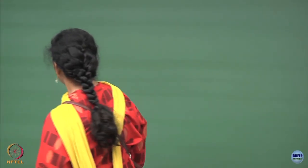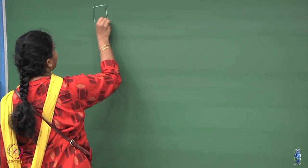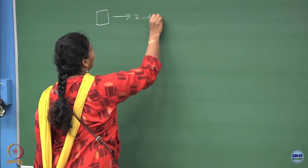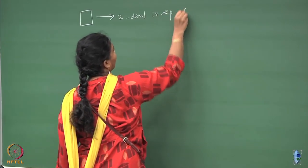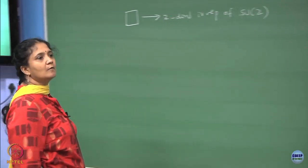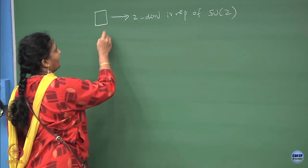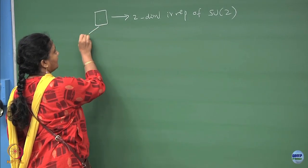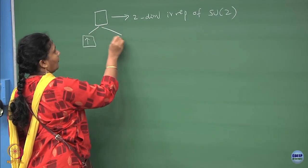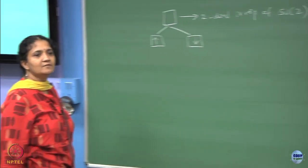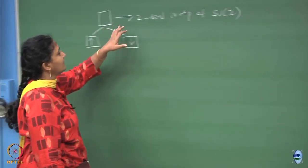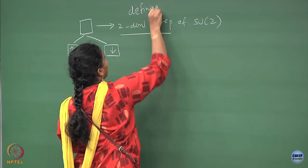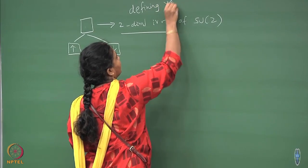Basically, I said that this single box will be the two-dimensional representation of SU(2). The reason is that you can put either up spin or down spin inside this box. This is the notation, and this irrep we call the defining representation or the lowest defining representation.